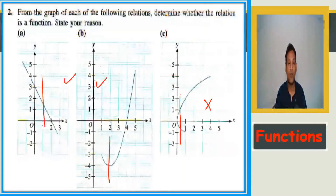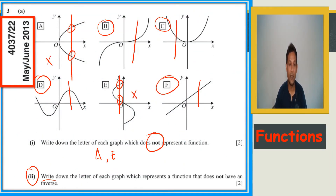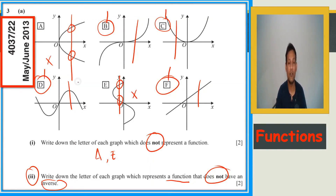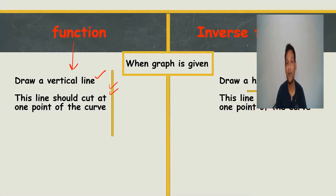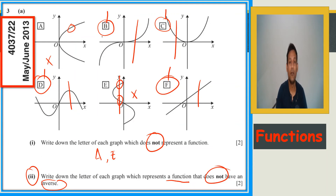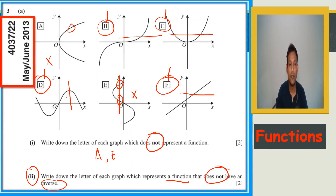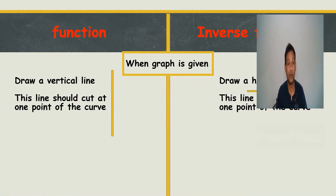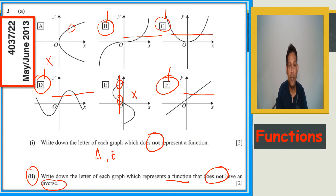Now for inverse functions — the question asks: write down the letter of each graph that represents a function whose inverse does not exist. First identify which are functions: B, C, D, and F are functions. To check if an inverse is possible, draw a horizontal line. This horizontal line should cut the curve at only one point for the inverse to exist.